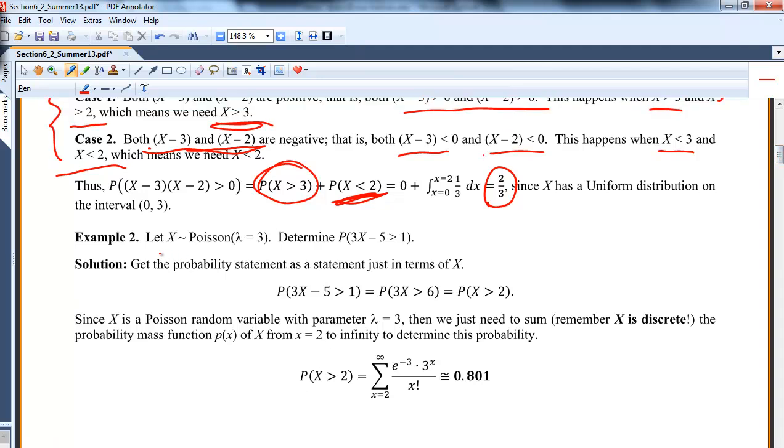Here's another example. This is discrete. Suppose x is a Poisson and I want to find the probability that 3x minus 5 is bigger than 1. I don't need to find the distribution function for this. What I'm going to do is just set this up as an expression in terms of x and then solve according to what we've done earlier. This is the same as x bigger than 2.